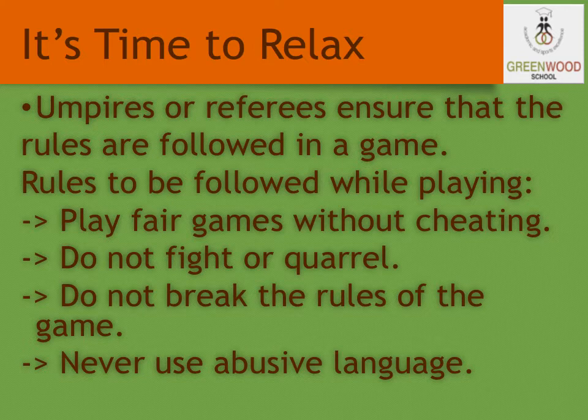What are the rules to be followed while playing? Who ensures that the rules are followed in the game? An umpire or referee ensures that the rules are followed. While playing games such as football and basketball, there are some set of rules we need to follow. Kids should make sure they play fair games and don't cheat each other. They should not fight or quarrel, should not break the rules of the game, and most importantly, should never use abusive language. The umpire or referee will ensure that kids are following the rules.